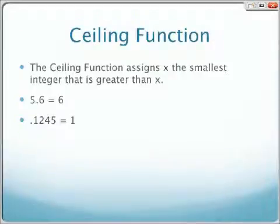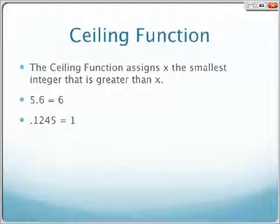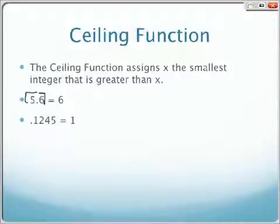The ceiling function is the opposite of the floor function. It assigns x the smallest integer that is greater than x. For example, the ceiling function of 5.6 is equal to 6, and the ceiling function of 1.245 is equal to 1.